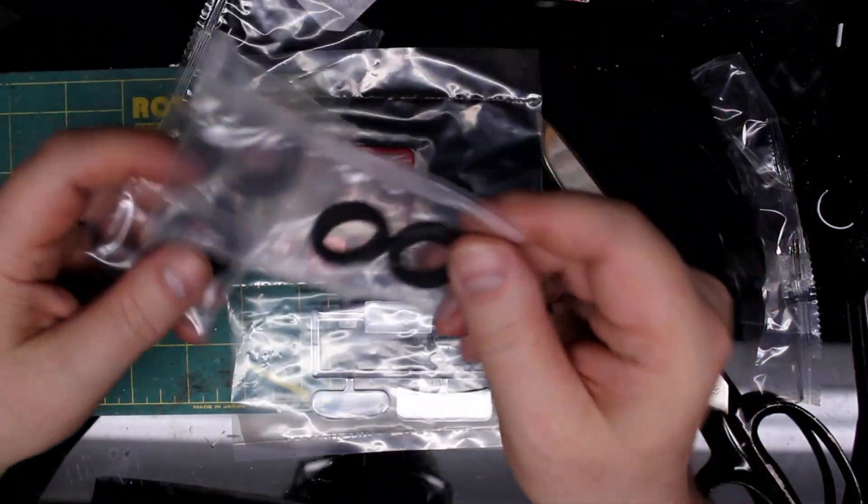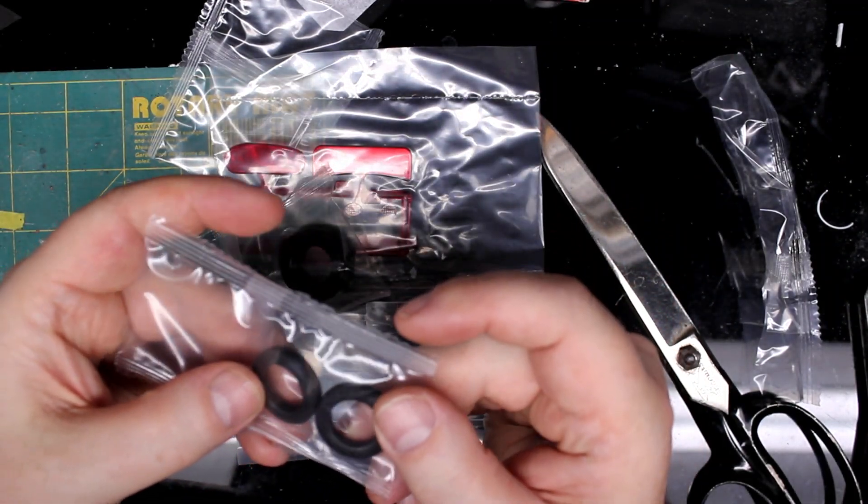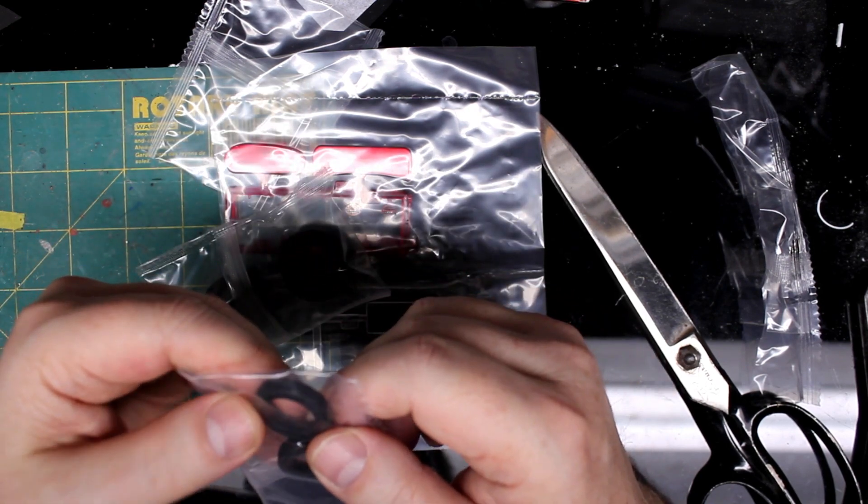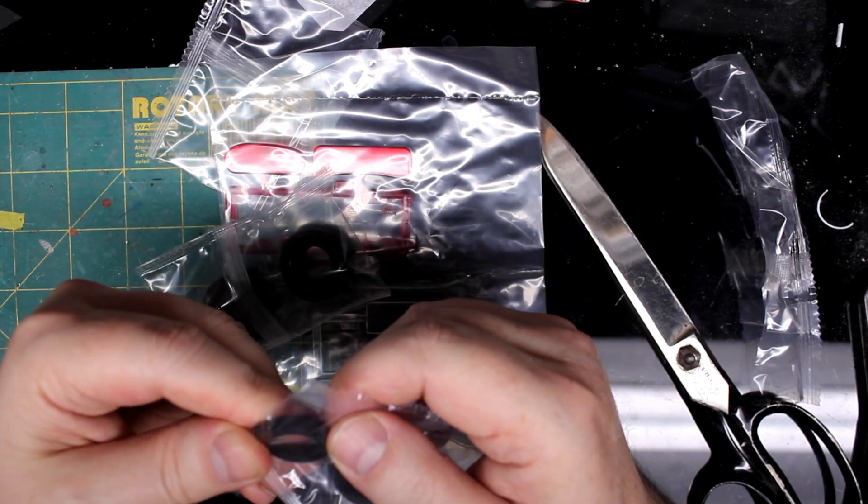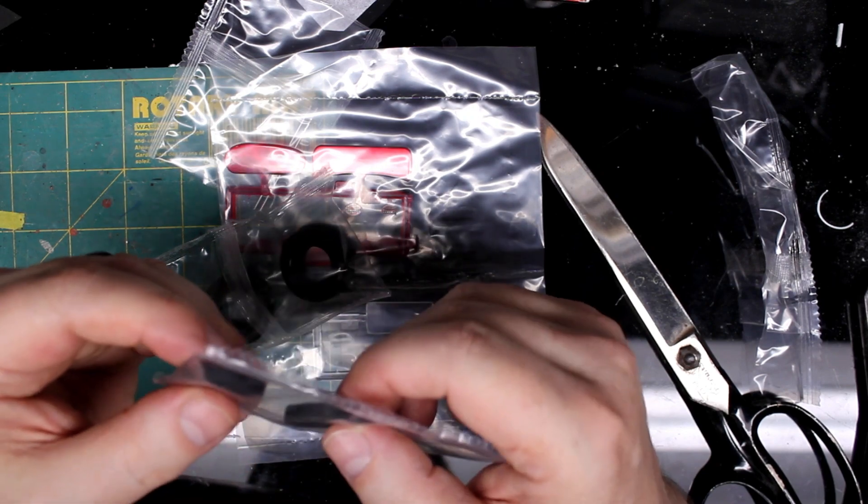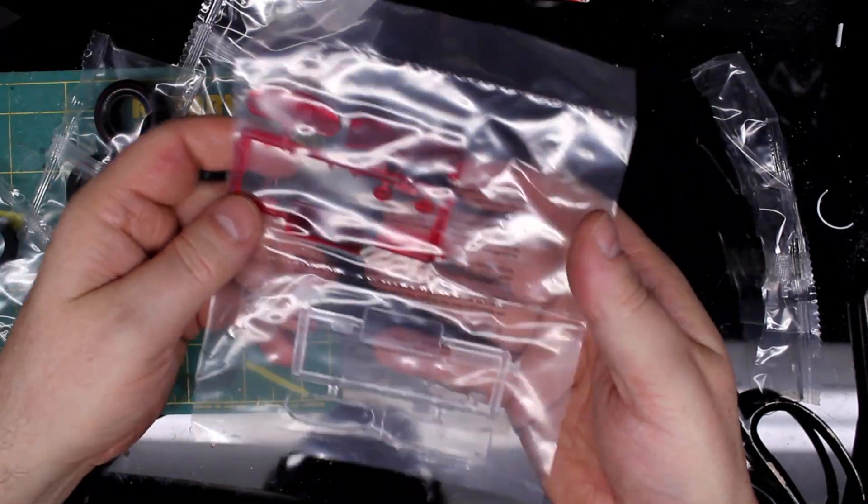And some front wheels that are also marked. And those are, I don't know what that says. General, general something. Two glass options, red or clear.